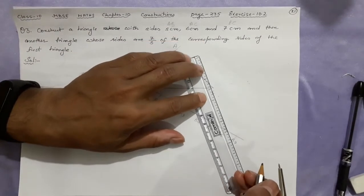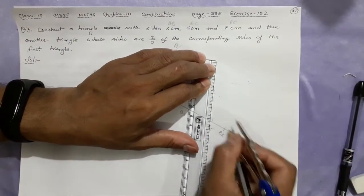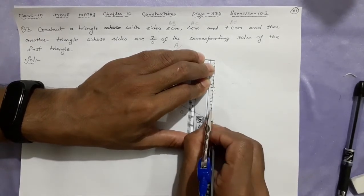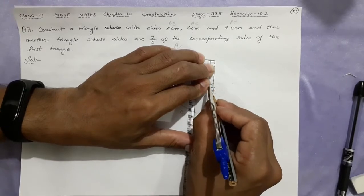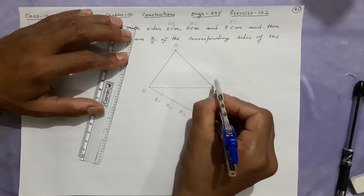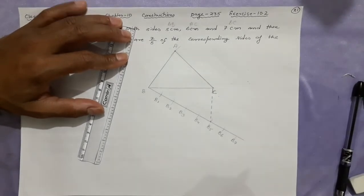Earlier here we were joining the last one. Now we will join this one. That means this we are going to find it here. This we are going to find that extra point. You understand? Done. This is C here.